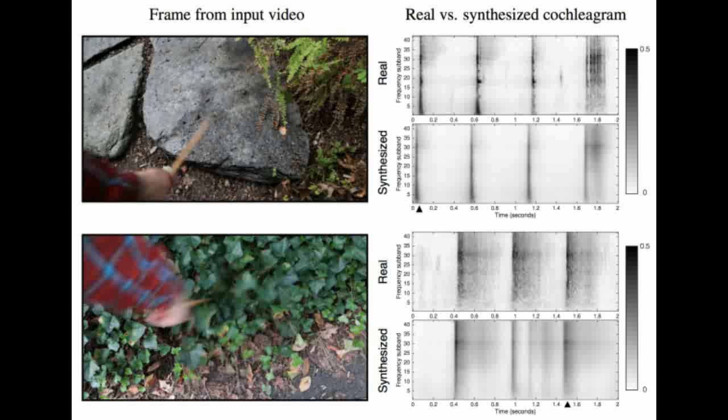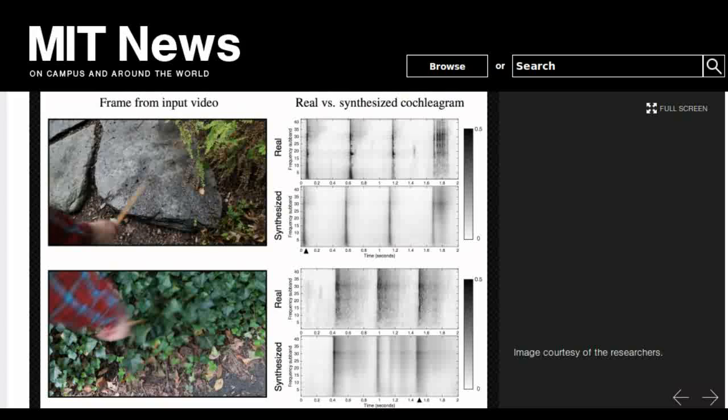To then predict the sound of a new video, the algorithm looks at the sound properties of each frame of that video and matches them to the most similar sounds in the database. Once the system has those bits of audio, it stitches them together to create one coherent sound.